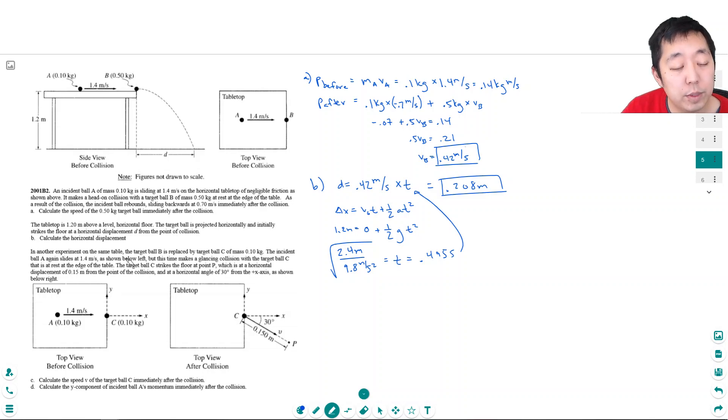In another experiment on the same table, the target ball B is replaced with target ball C of mass 0.1 kilograms. The incident ball again slides at 1.4 meters per second, but this time it's a glancing collision with target ball C that is at rest on the edge of the table. The target ball C strikes the floor at point P, which is a horizontal displacement of 0.15 meters from the point of collision and a horizontal angle of 30 degrees from the x-axis. Calculate the speed of the target ball immediately after the collision.